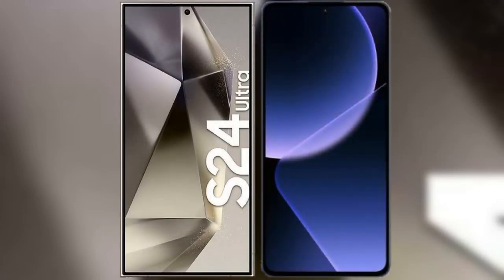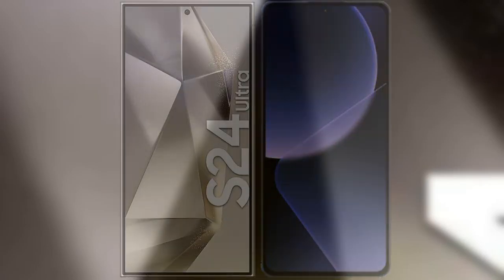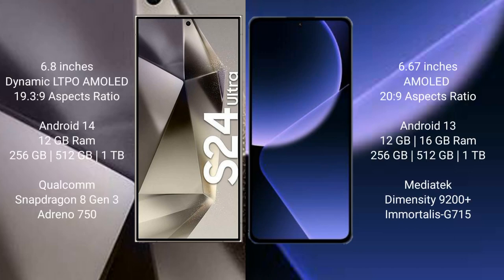I will compare the new Samsung Galaxy S24 Ultra with Xiaomi 13T Pro. Samsung Galaxy S24 Ultra comes with a 6.8-inch Dynamic LTPO AMOLED display with an aspect ratio of 19.3:9. Xiaomi 13T Pro comes with a 6.67-inch AMOLED display with an aspect ratio of 20:9.